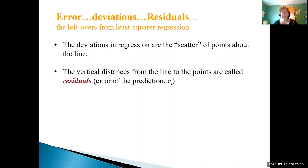The deviations in regression are the scatter of points around our best fit line. These vertical distances from the line to the points are called the residuals or the error of the prediction e sub i. They're the leftover variation after a regression line is fit.